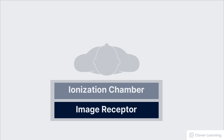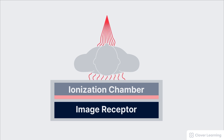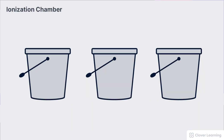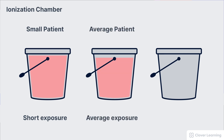Once an exposure is initiated, it continues until the ionization chambers have detected the correct level of exposure to create a good image, and then the exposure is terminated. For every patient, the bucket is the same size, because the receptor exposure needed for a good image is the same. However, smaller patients absorb less radiation, so the buckets fill up fast and the exposure shuts off sooner. Average size patients absorb more radiation, so the bucket takes a little longer to fill. Large patients absorb even more radiation, so the bucket takes even longer to fill.